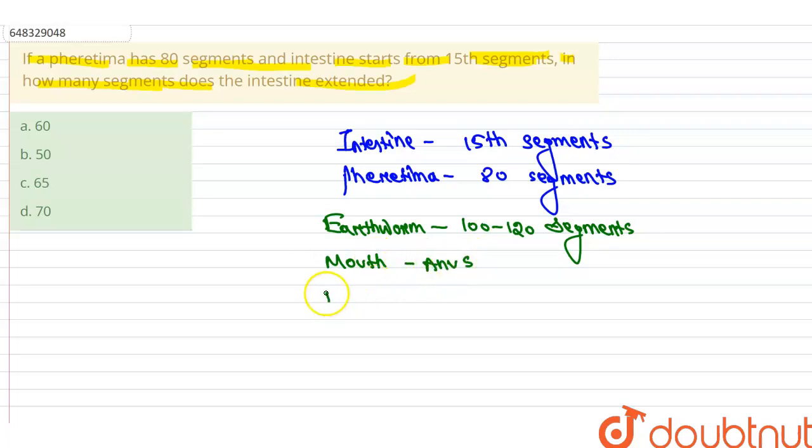The buccal cavity which is 1st to 3rd segment. Then the pharynx, which is 3 to 4. Then third one is the esophagus...